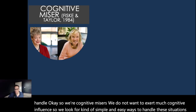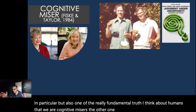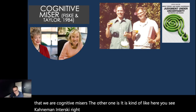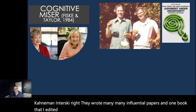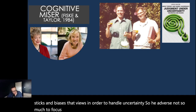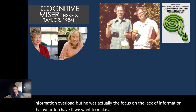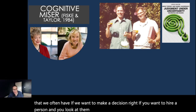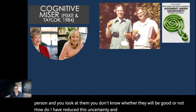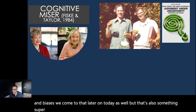The other response comes from Kahneman and Tversky, who wrote many influential papers and one edited book, 'Judgment Under Uncertainty.' They identified certain heuristics and biases we use to handle uncertainty — not so much information overload, but the lack of information we often have when making decisions. For example, if you want to hire a person and look at them, you don't know whether they'll be good. How do you reduce this uncertainty? You use heuristics and biases — something super influential across all of psychology, but especially in social psychology.